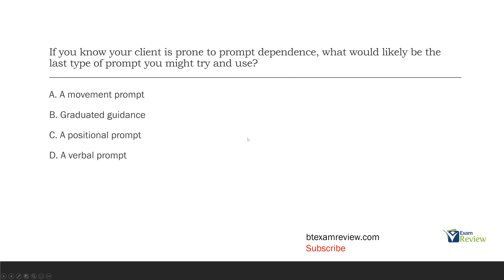Answer A: a movement prompt is basically a gestural prompt — pointing at something, touching something. Not that intrusive. Answer B: graduated guidance is a type of physical prompting. Physical prompting is the most intrusive prompting we can have. The only thing more intrusive than graduated guidance would be a full physical prompt, and if that's not an answer, our answer is most likely B. Answer C: a positional prompt is very unintrusive — you're just moving the stimuli around. Answer D: a verbal prompt is arguably the least intrusive prompt there is. So if we want to prevent prompt dependence, we need to choose the least intrusive prompts. The last type of prompt we'd want to use is graduated guidance, which is physical and the most intrusive.